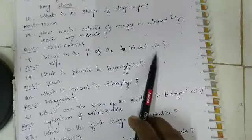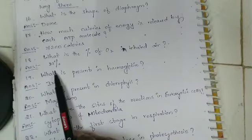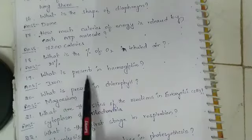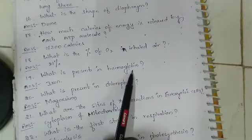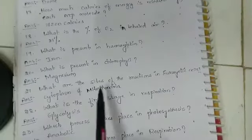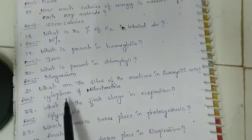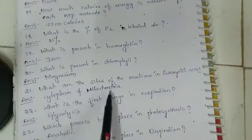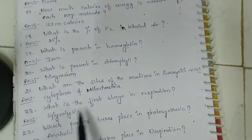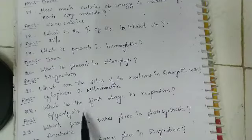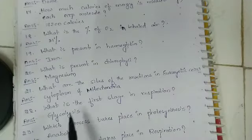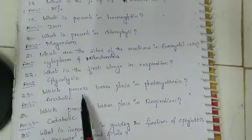What is present in hemoglobin? Iron. What is present in chlorophyll? Magnesium. What are the sites of the reactions in eukaryotic cells? Cytoplasm and mitochondria. What is the first stage in respiration? Glycolysis.